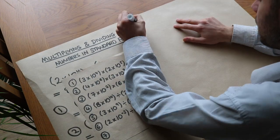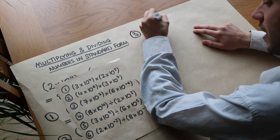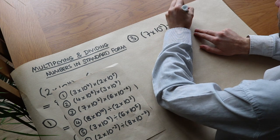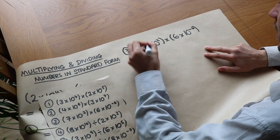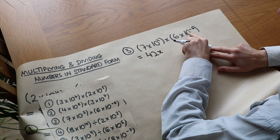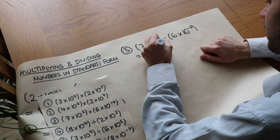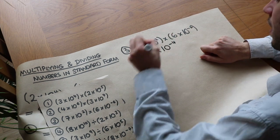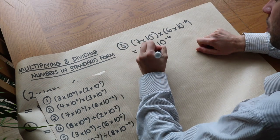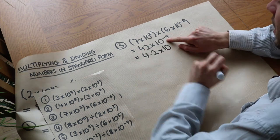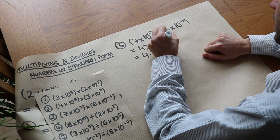What about the next one? We've got 7 times 10 squared times 6 times 10 to the minus 6. We do the usual thing: 7 times 6 is 42, and 10 to the 2 times 10 to the minus 6 — we do 2 plus negative 6, which is 2 minus 6 — that's 10 to the minus 4. Then we need to make that 10 times smaller so it becomes 4.2, and the power goes up by 1: minus 4 plus 1 is minus 3.